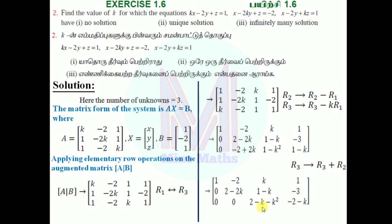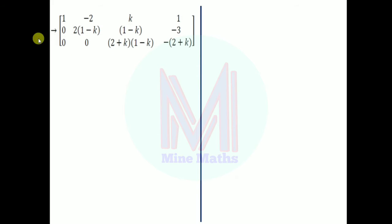After simplification, we get (2+k)(1-k) for one entry. Based on these values, we'll analyze different cases for k to determine if there's no solution, unique solution, or infinitely many solutions.